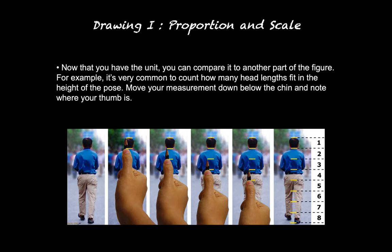For example, it's very common to count how many head lengths will fit in the height of the pose. Move your measurement down below the chin and note where the thumb is. You have the back of the head, with the thumb at the bottom of the neck. You measure that down and see that this person in that pose is actually eight heads compared to their own head.